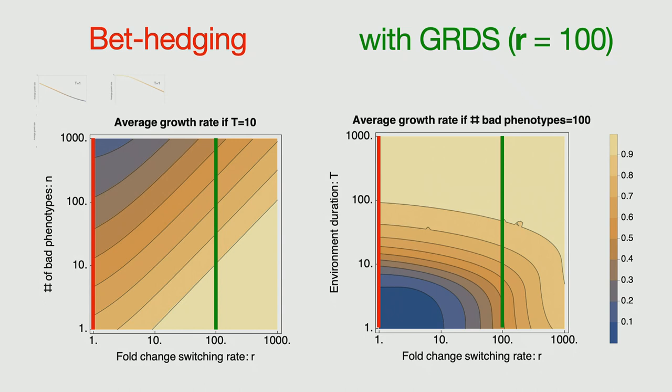So along the y-axis, we see the normal bet hedging. There's no, there's just a growth rate dependent stability that is one. So everything is the same. And if you then go to the right, and on the y-axis, we change the parameters, the number of bad phenotypes, and the environment duration. And if you go to the right, you see that you always get an increase in the fitness. Well, there's some more things that we can see in this plot. For example, what are these diagonal lines meaning? Well, we can talk about this later. Sorry, I don't have time.